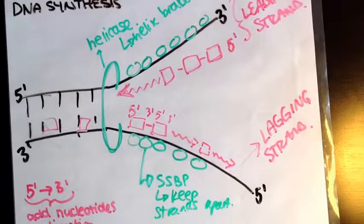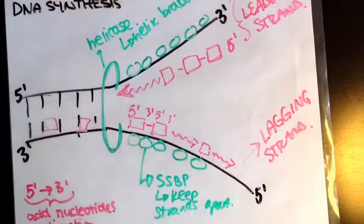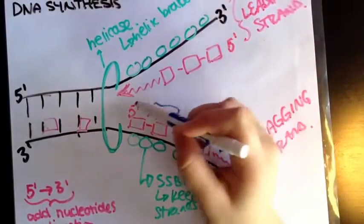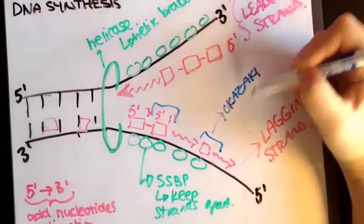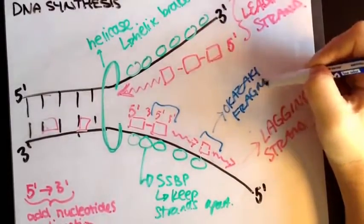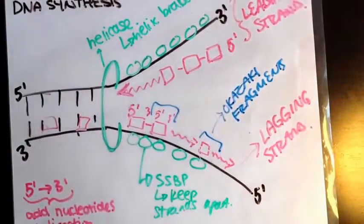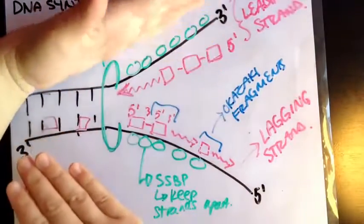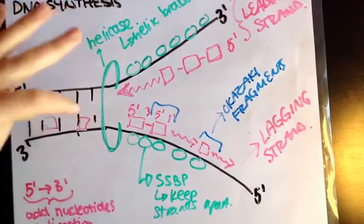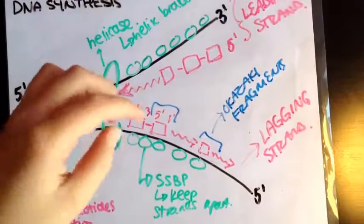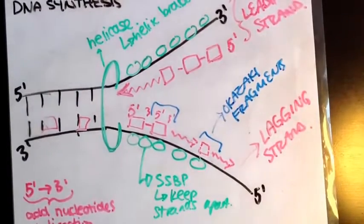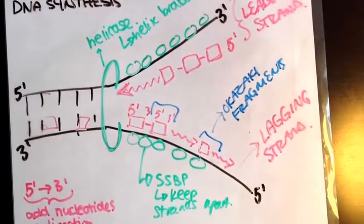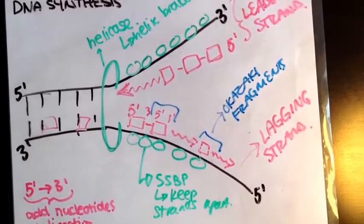Just to further clarify: since these are going to be little segments with gaps in between, these little segments of DNA are called Okazaki fragments. Those are the fragments of DNA added as the helix opens up. Each sequence is an Okazaki fragment and the gaps between them are called nicks. Later on in the process, polymerase comes in and seals them up — but that's a whole other video.